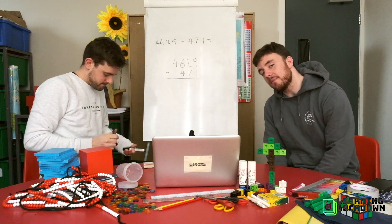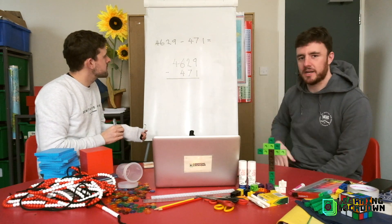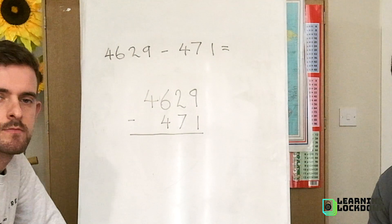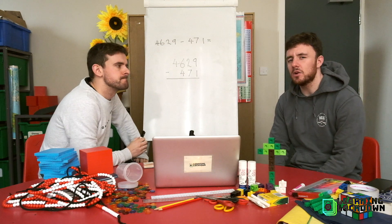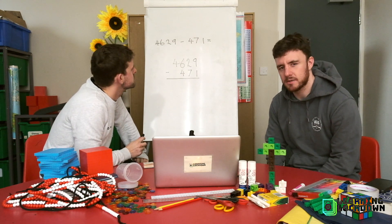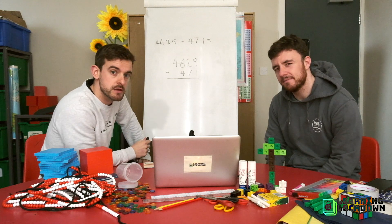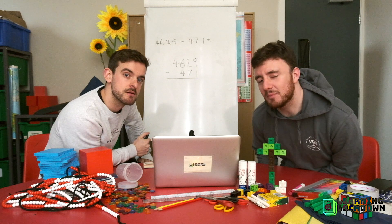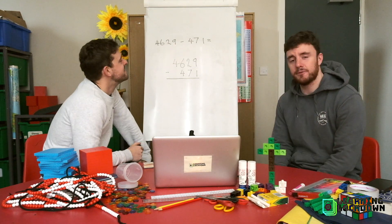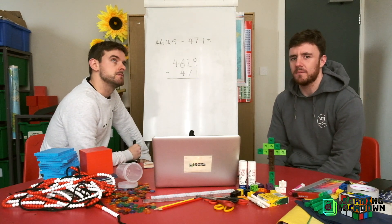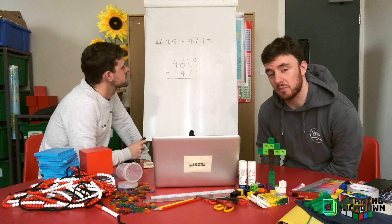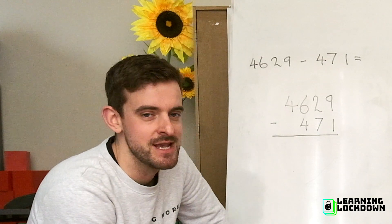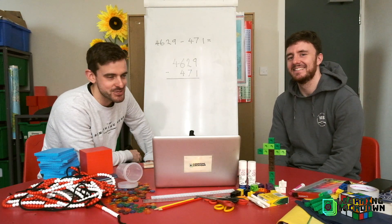So welcome to level 2. And on level 2 this is our equation that we are trying to solve. We've got 4629 subtract 471. Now take a little look at that and see what you can spot. Can you spot it? I'm sure you have. Yes we have a 4 digit number subtract a 3 digit number. So you've got to be very very careful when this happens. Why is that Mr. A?